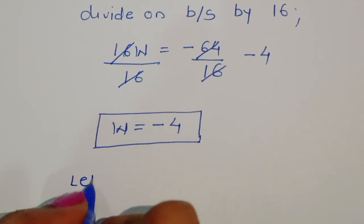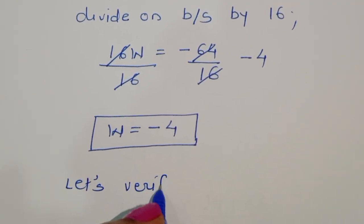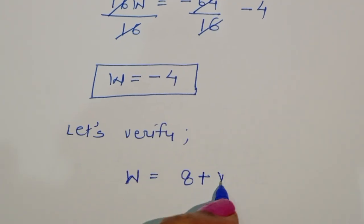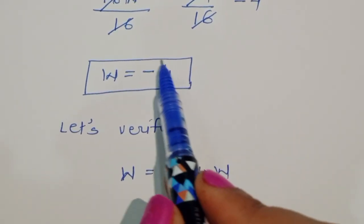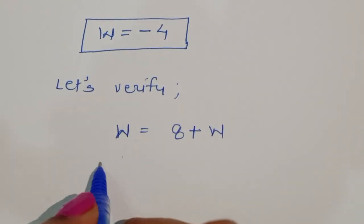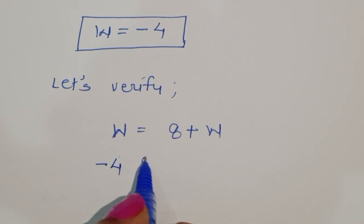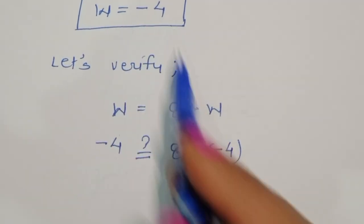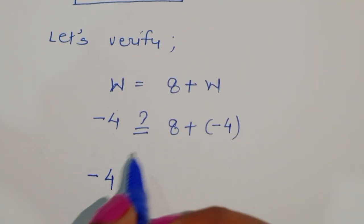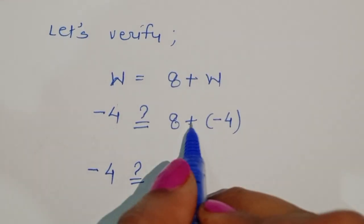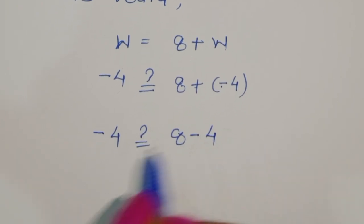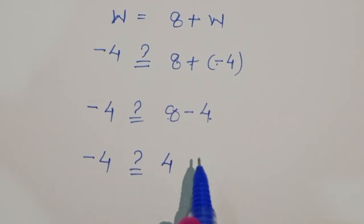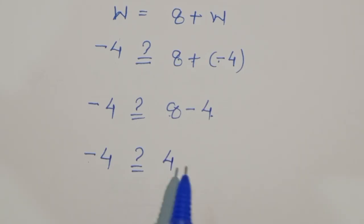Now let's verify this value. Our equation is √w = 8 + w. Substituting w = -4, we get: is √(-4) = 8 + (-4)? That gives us -4 on the left and 4 on the right, so -4 is not equal to 4.